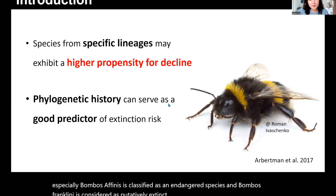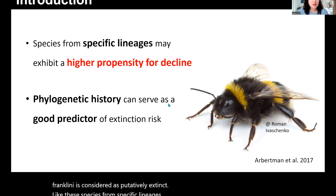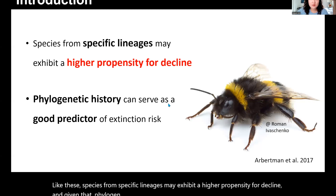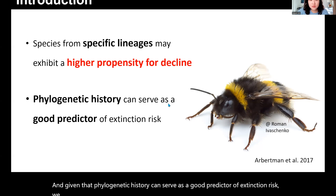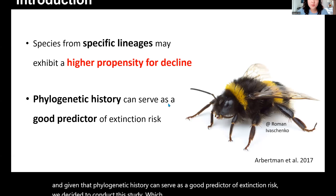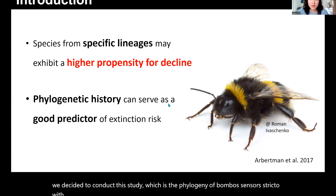Species from specific lineages may exhibit a higher propensity for decline. And given that phylogenetic history can serve as a good predictor of extinction risk, we decided to conduct this study, which is the phylogeny of Bombus sensus stricto with its associated biogeographic patterns.